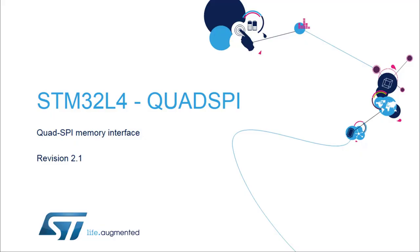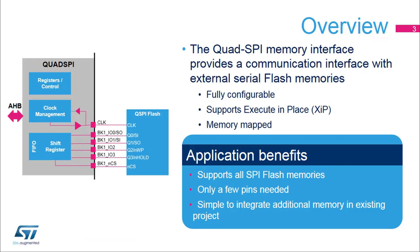Hello and welcome to this presentation of the STM32 Quad SPI memory interface. It covers the main features of this interface, which is widely used for connecting external memories to the microcontroller. The Quad SPI memory interface integrated inside STM32 products provides a communication interface allowing the microcontroller to communicate with external SPI and Quad SPI memories. This interface is fully configurable, allowing easy connection of any existing serial memories available today on the market.